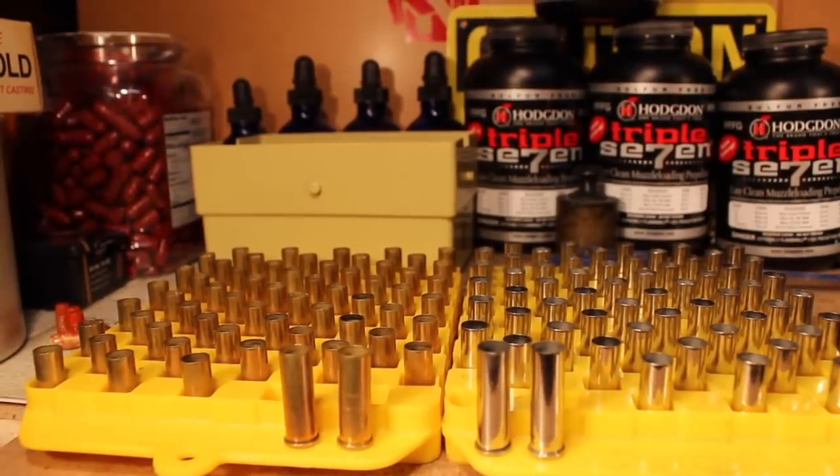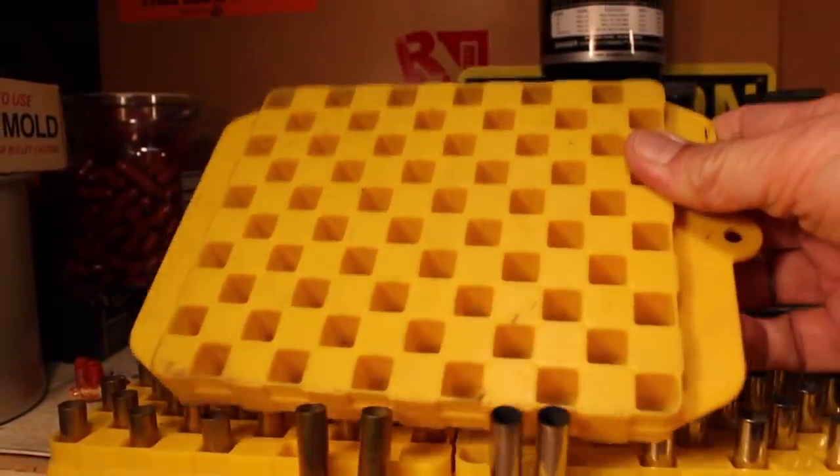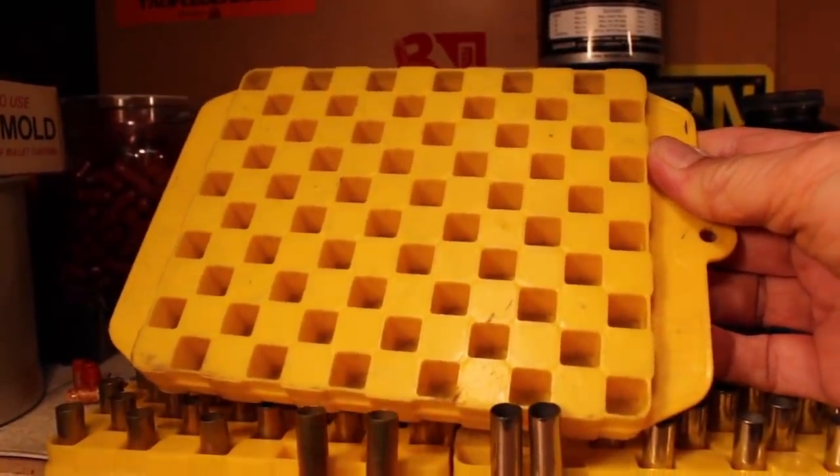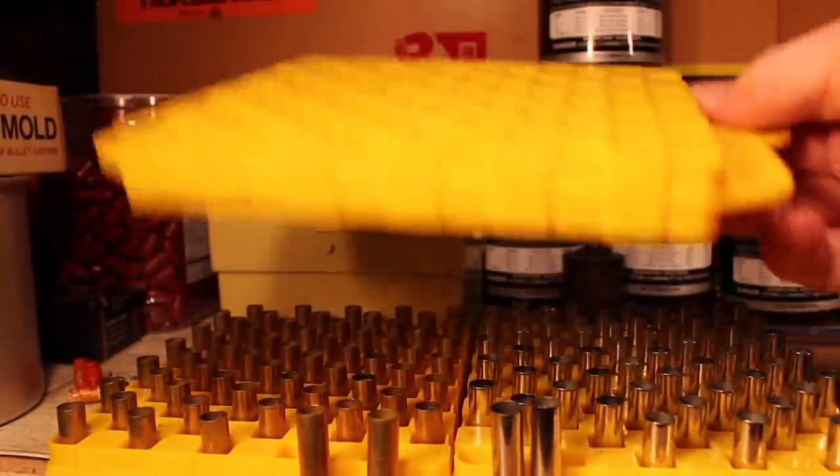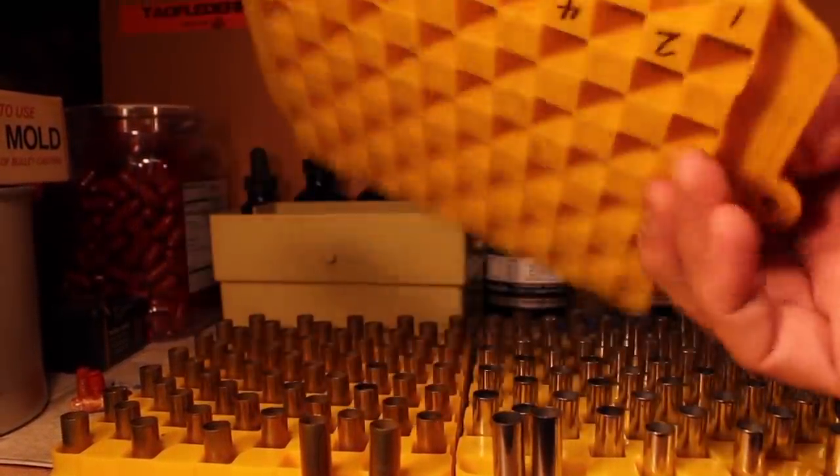By the way, for those of you who are wondering, these loading blocks are the Flambeau loading blocks from the 1970s. They're very good because they have two sides to them for different sizes. This is .38 Special. This is .45.